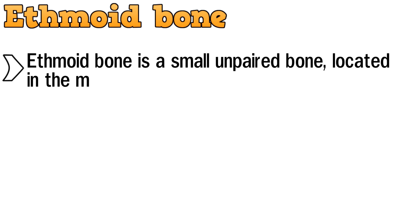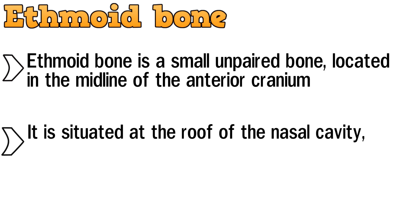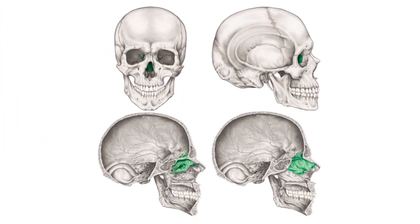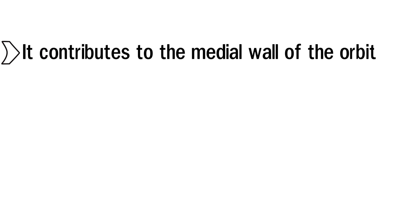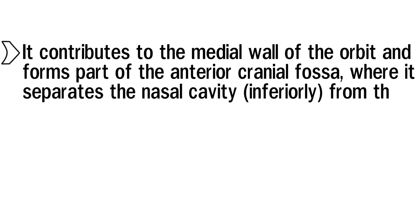Ethmoid bone is a small unpaired bone, located in the midline of the anterior cranium. It is situated at the roof of the nasal cavity and between the two orbital cavities. This bone shaded in green is the ethmoid bone. It contributes to the medial wall of the orbit and forms part of the anterior cranial fossa, where it separates the nasal cavity inferiorly from the cranial cavity superiorly.